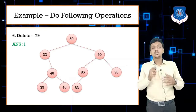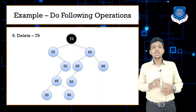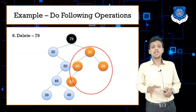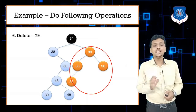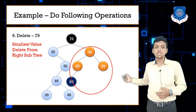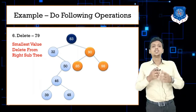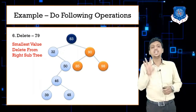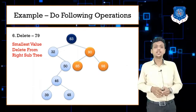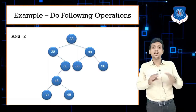Answer 2: Take the smallest value from the right subtree of 79. The right subtree's smallest value is 83. So 83 is highlighted and takes the place of 79. This is the figure after deleting 79 and replacing it with 83, the smallest value from the right subtree. Both Answer 1 and Answer 2 are correct.